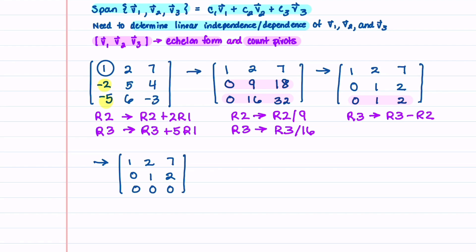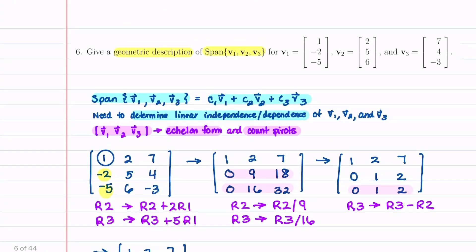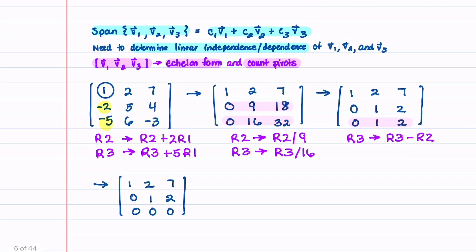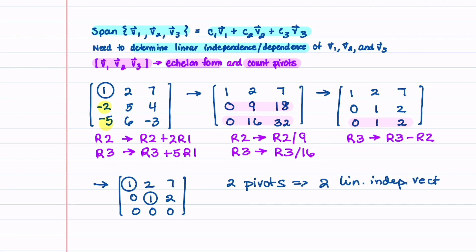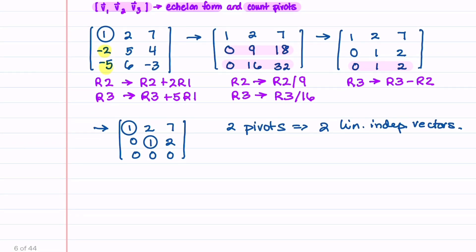Now, what we're after is the geometric description, so we need to know how many of V1, V2, and V3 are linearly independent. If we circle our pivots, we can see that we have two pivots, which means we're going to have two linearly independent vectors.